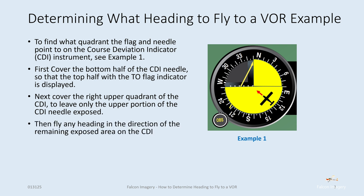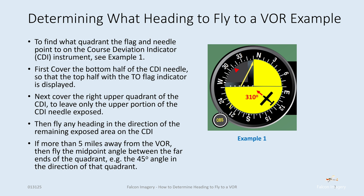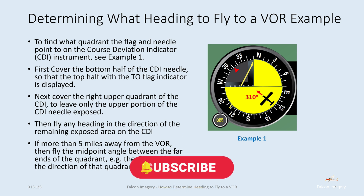Then fly any heading in the direction of the remaining exposed area on the CDI. As you can see by the plane, we have a heading toward the northwest. And if we're more than five miles away from the VOR, we're going to fly the midpoint angle between the far ends of the quadrant — in this example, we're going to fly heading about 310.